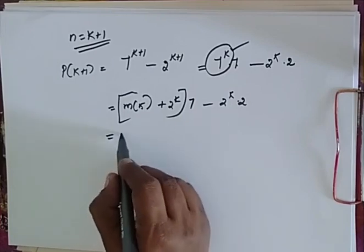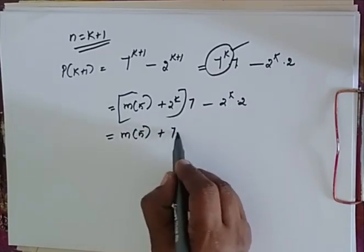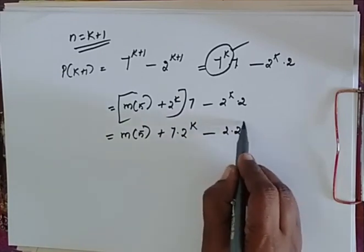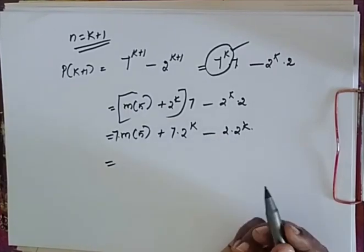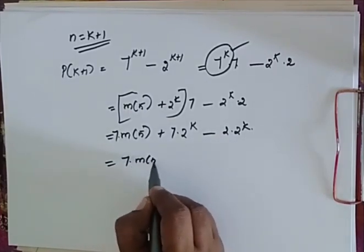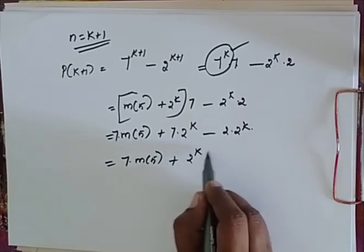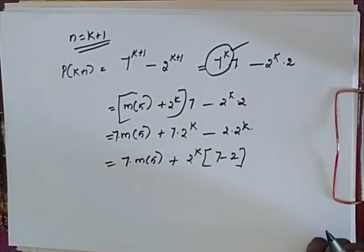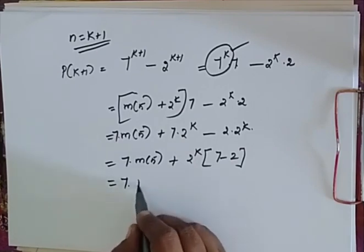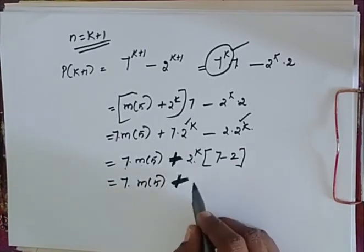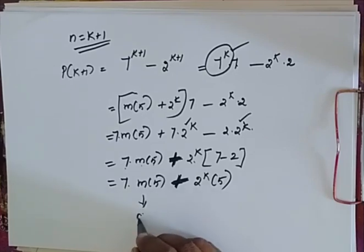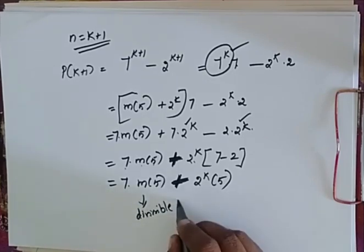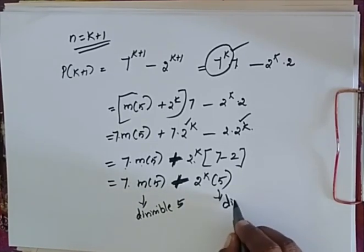Now expand this: m·5 plus 7 into 2^k minus 2^k into 2. Taking 2^k outside, I get 7 minus 2, which equals 5. So this simplifies to 7 into some multiple of 5 plus 2^k into 5. This is also divisible by 5.